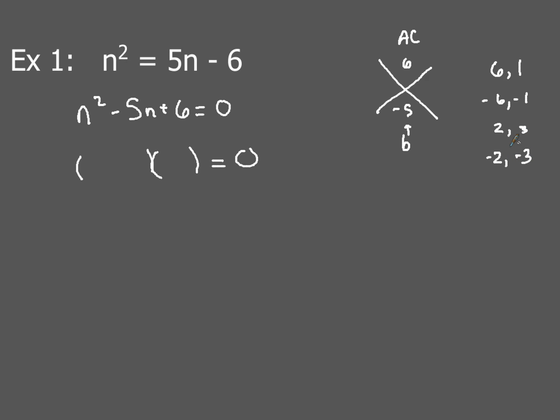So of all of those pairs, only one of them will give me a product of 6 and a sum of negative 5. So of course that would be this last pair right here. So what people do is they'll write 1 in there and 1 in there. Now what you do here is then you will go ahead and use those two values to write in your factors.